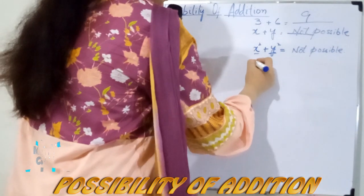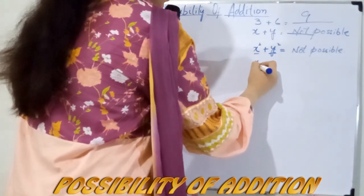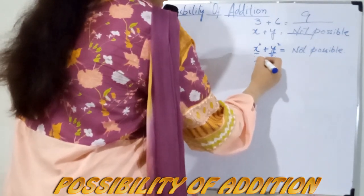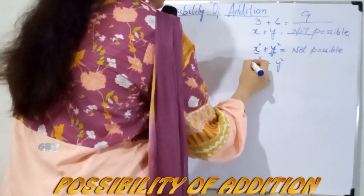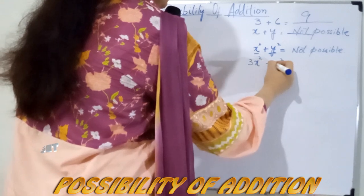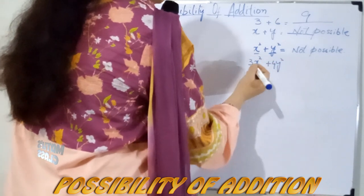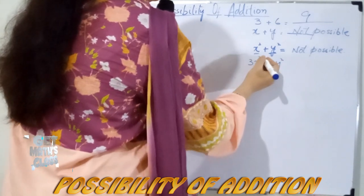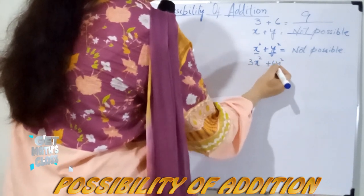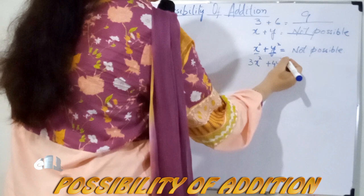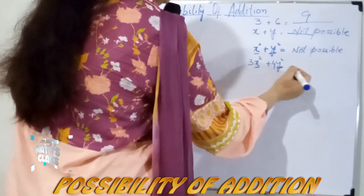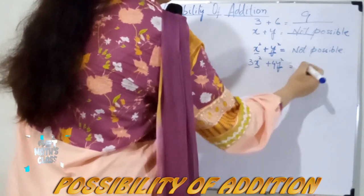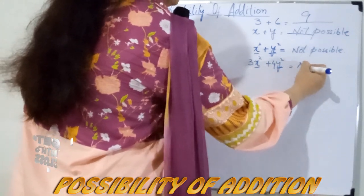Here, addition between terms with some coefficient but different variables: 3x square plus 4y square. The variables are different, so addition is not possible.